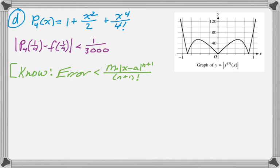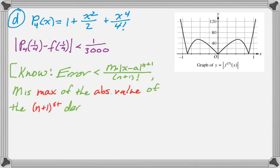So basically the exponent of that absolute value will be the same as the factorial in the denominator. And m is the maximum of the absolute value of the n plus 1st derivative on the interval from x to a, or sometimes the interval from a to x. In this case it's a to x because a is less than x. A is 0, x is 1/4. All right,